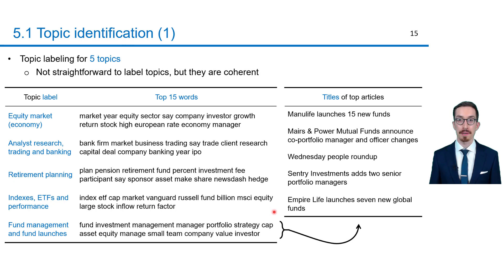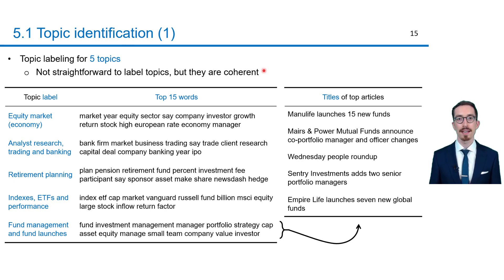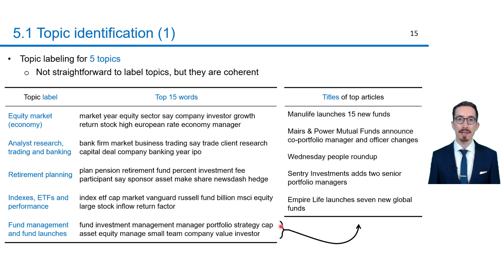Labeling topics is not always straightforward, but these topics seem coherent. For instance, it is reasonable that indexes, ETFs, and performance occur in one topic, since the performance is usually measured by indexes and since indexes can be replicated by ETFs. Moreover, the titles of top articles of topics were used to label these topics. The titles here on the right are those of the topic fund management and fund launches — for example, 'Manulife launches 15 new funds' or 'Mayors and Power Mutual Funds announce co-portfolio manager and officer changes' — which are consistent with the label.